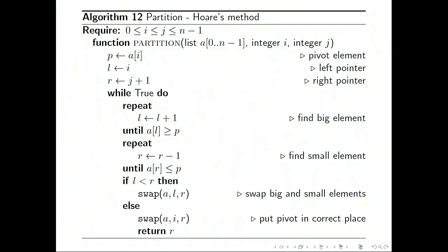If they haven't already crossed, we swap those elements. We push the large element to the right and the small element to the left. Otherwise, if we've crossed, we stop. There's nothing more to do except to swap the pivot element into its correct position.